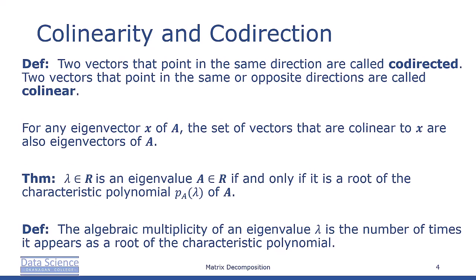Any two vectors that point in the same direction are called codirected. If vectors point in the opposite direction, they're called collinear. If x is an eigenvector of a matrix A with associated eigenvalue lambda, then for any real number c other than zero, it's also true that cx is an eigenvector of A with the same eigenvalue. This means the set of eigenvectors of A is not unique — all vectors collinear to any eigenvector are also eigenvectors.